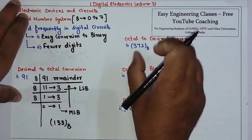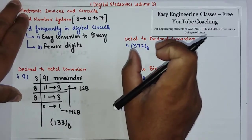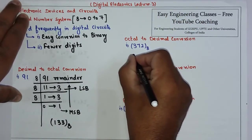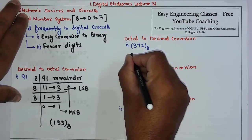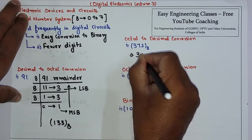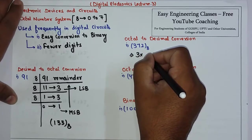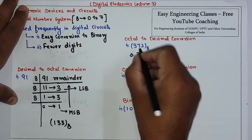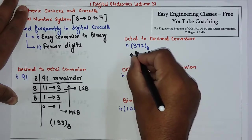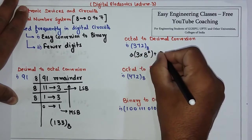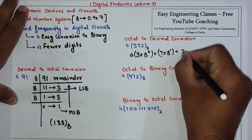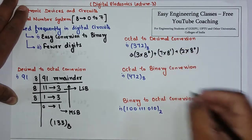For octal to decimal conversion, we multiply each digit by the base raised to the power of its position. The base is 8. So, for example: 3 into 8 to the power 2, plus 7 into 8 to the power 1, plus 2 into 8 to the power 0.